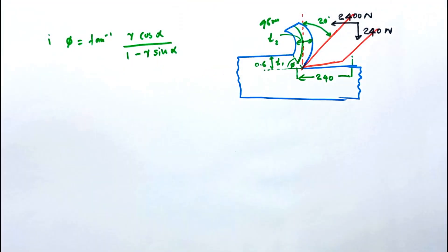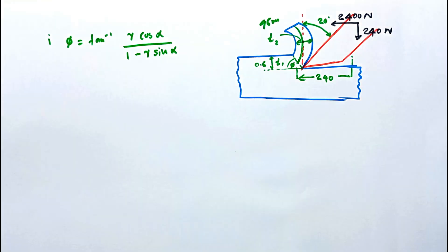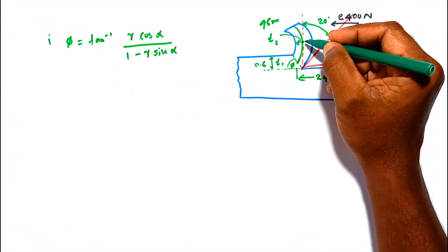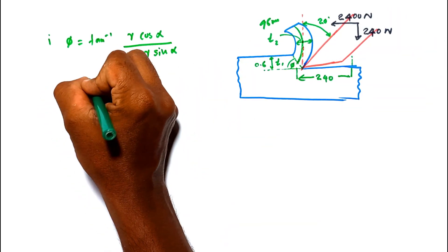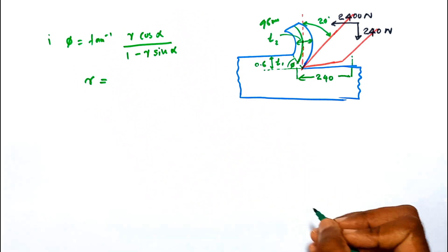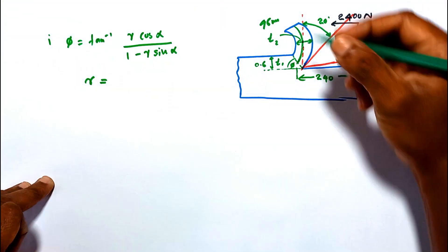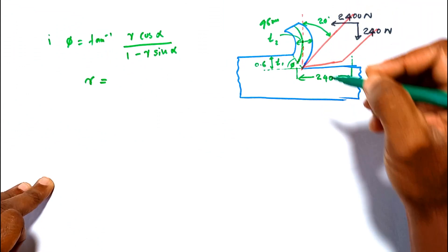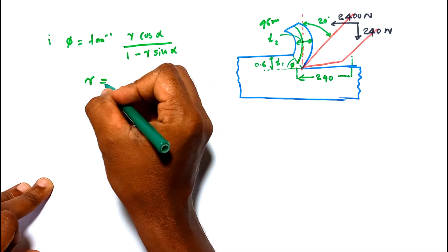Here r is the chip thickness ratio. The chip thickness itself is not given in this problem, so we have to determine the chip thickness ratio r using the length of the removed chip and the uncut chip layer.